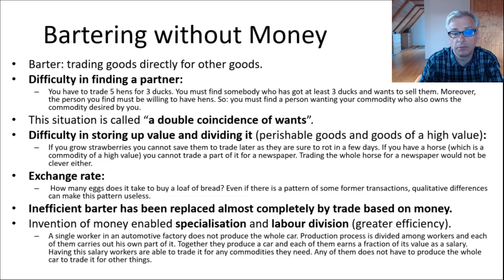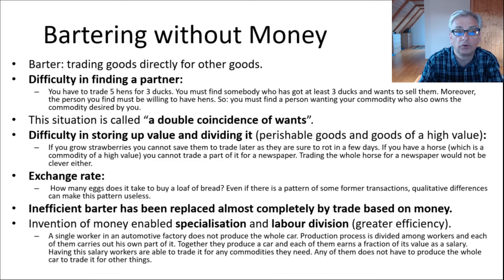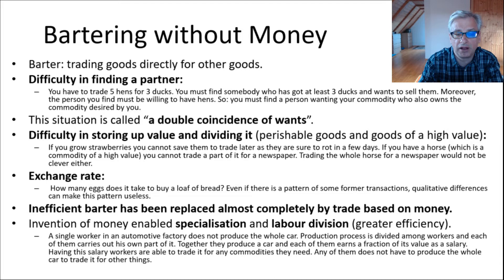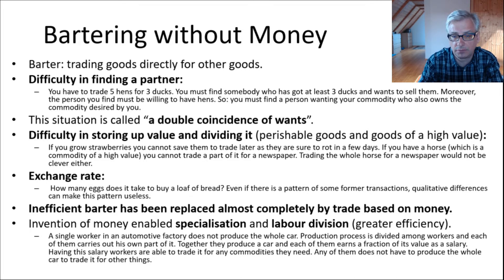With normal money, it's much easier — a single coincidence of wants is enough. It's enough if I find someone who wants my product; I sell it, take money, and then simply look for someone who wants to sell what I want to buy. This is the divisibility and the store of wealth function that barter makes very difficult.